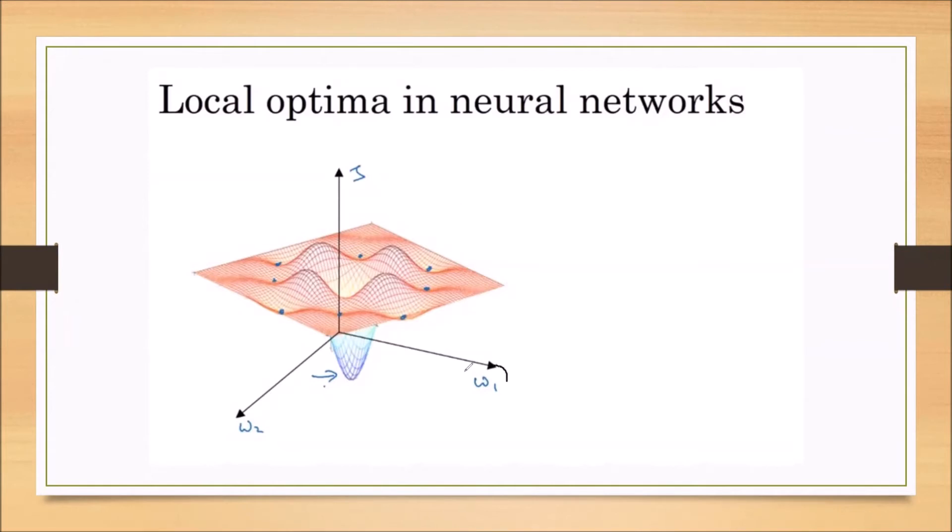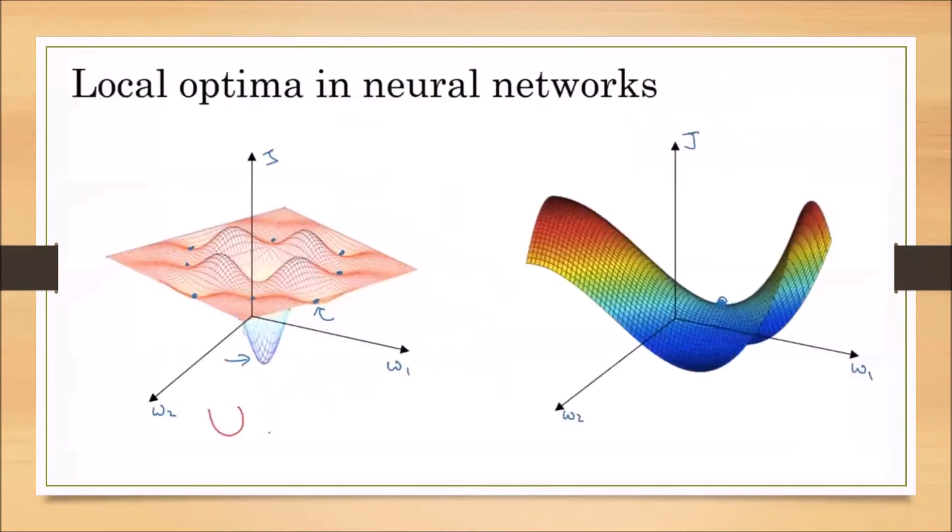of parameters. A huge number of parameters means local optima is not a problem in neural networks. When using gradient descent or Adam optimization algorithm, they both